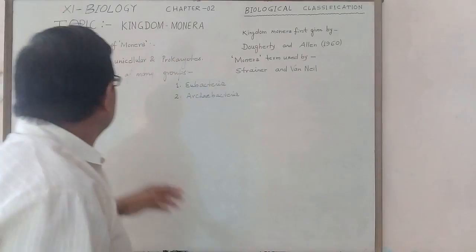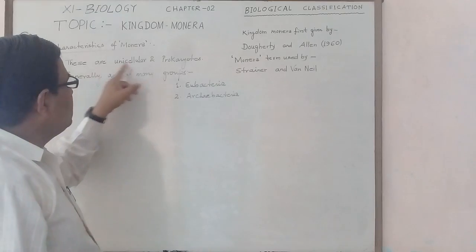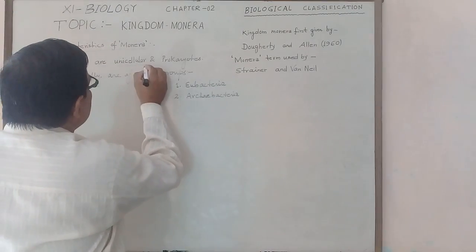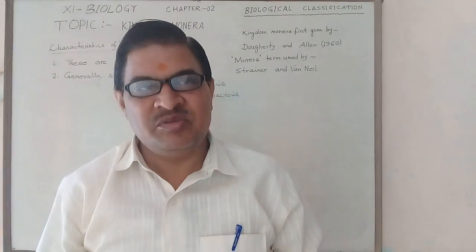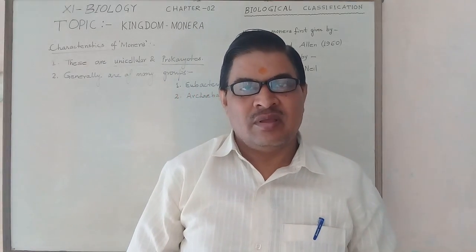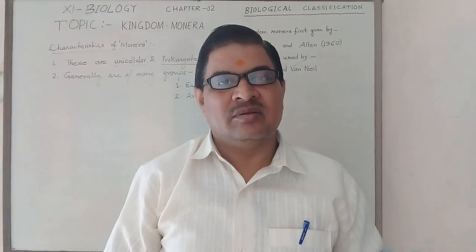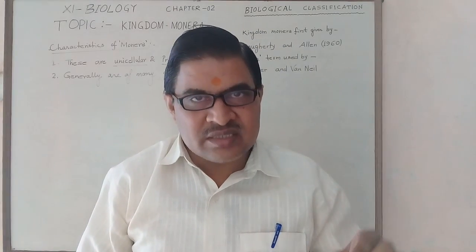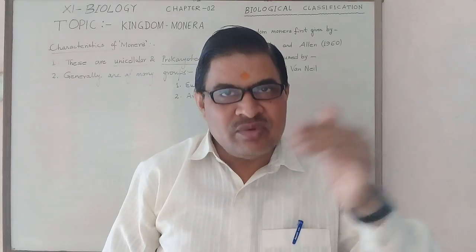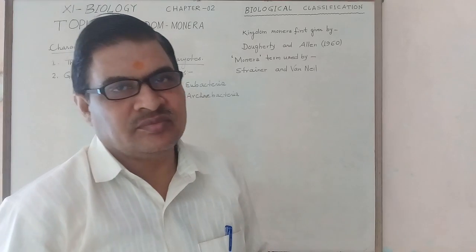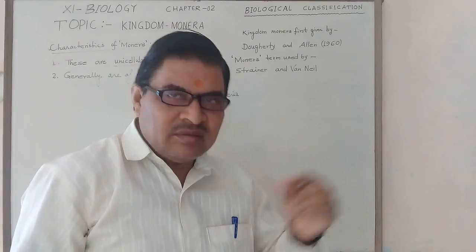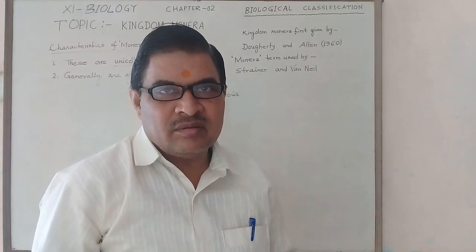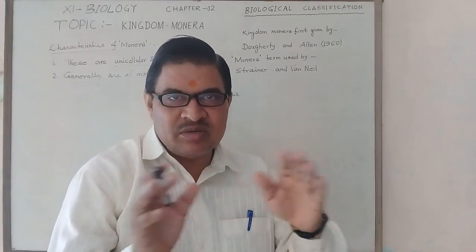Monera has important characteristics: these organisms are unicellular and prokaryotes. Unicellular means made of a single structure. As prokaryotes, the nucleus is not surrounded by a nuclear membrane — meaning there is presence of a nucleoid, which contains only genetic material, not surrounded by a nuclear membrane.